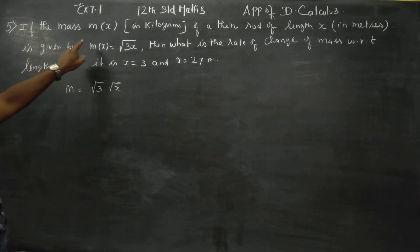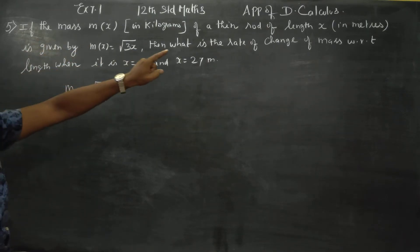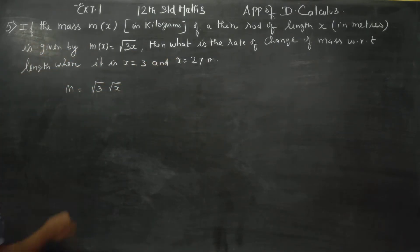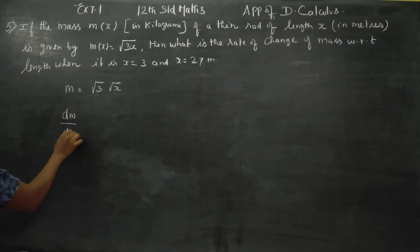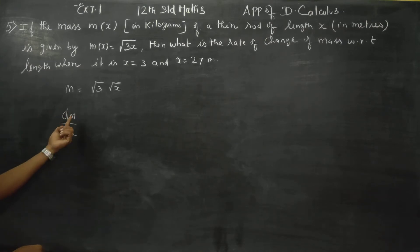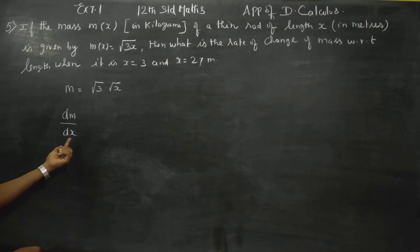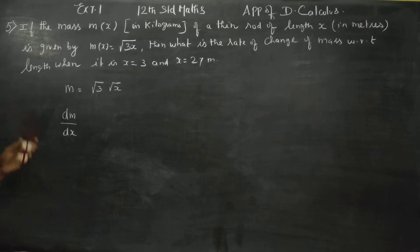If the mass of a thin rod is a function of length x, then dm/dx is the rate of change of mass with respect to its length.